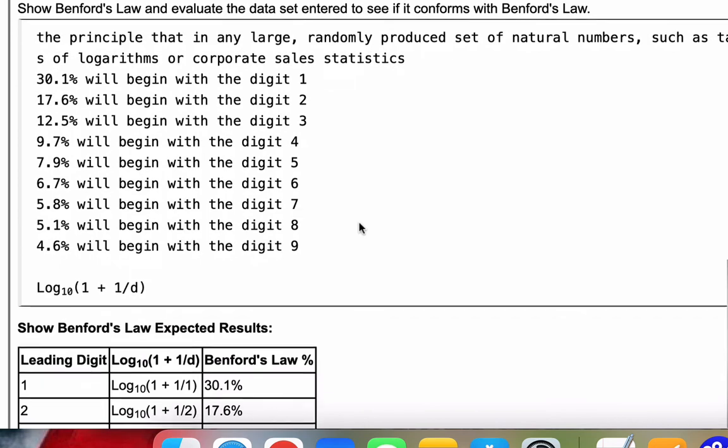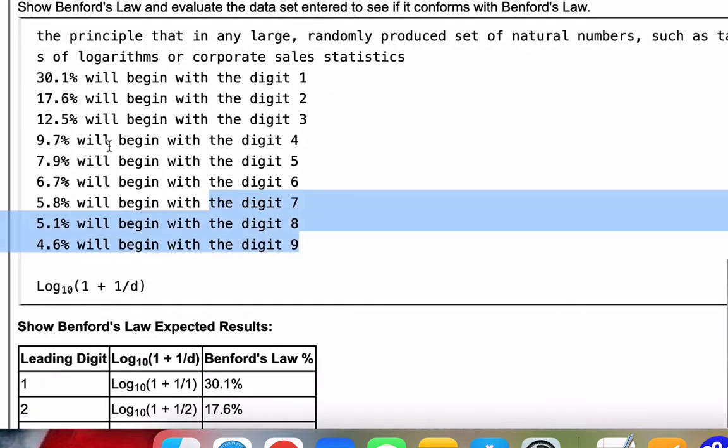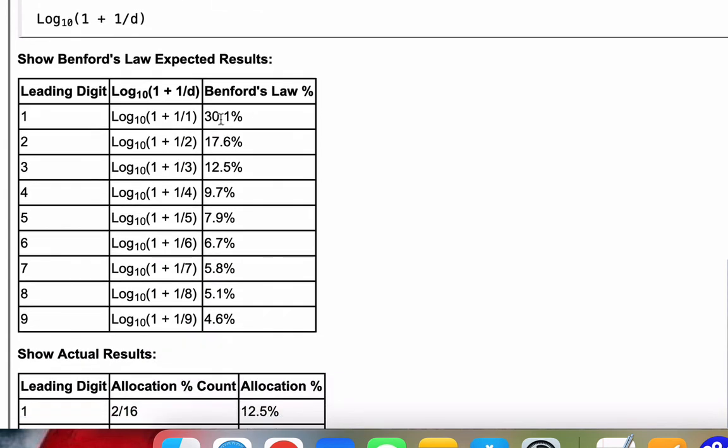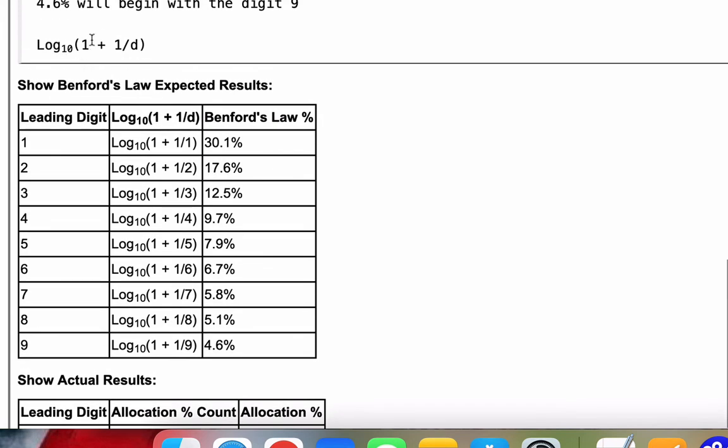We'll go ahead and click the button. To work out the math first for Benford's Law, I've put it in a table here. If your leading digit is 1, 2, 3, all the way down to 9, we use the log base 10 of 1 plus 1 over d formula, where d is the leading digit. I've plugged in the numbers here so you could work through the math, and when you do that, you get the exact percentages for Benford's Law.